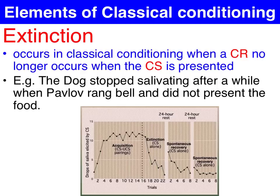Extinction is sometimes a good thing. For instance, if you're using classical conditioning to remove a maladaptive behavior such as gambling, alcoholism, smoking, or even phobias — in the case of aversion therapy, flooding, or graduated exposure — extinction is the aim.